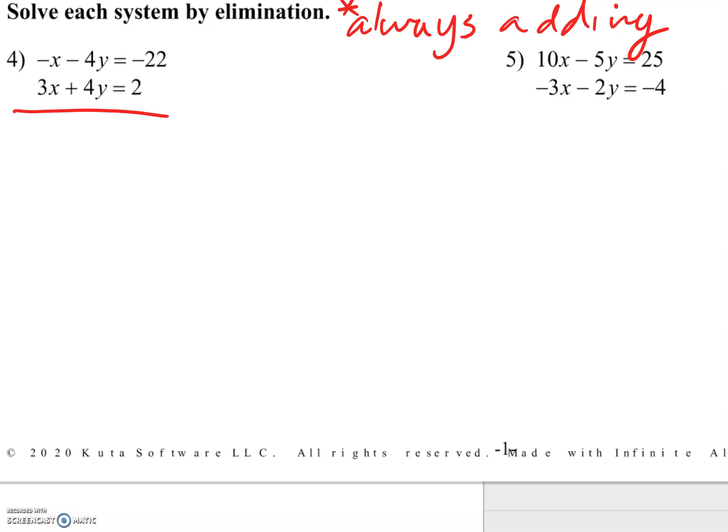In this case, I can just add the equations. I add like terms. Negative x plus 3x is 2x. Negative 4y plus 4y cancels out—hence the elimination method, because it eliminated that term. Negative 22 plus 2 is negative 20, so x equals negative 10.